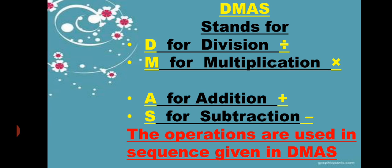From the name, DMAS: D stands for division, M for multiplication, A for addition, S for subtraction. The operations are used in sequence given in the DMAS. The sequence is first division, then multiplication, then addition, and last subtraction. We have to solve the question according to this sequence.